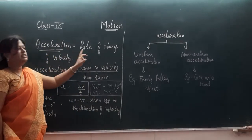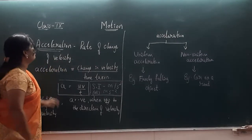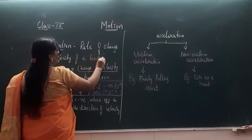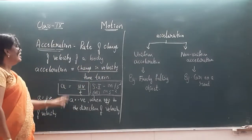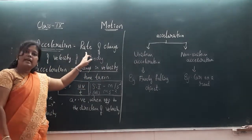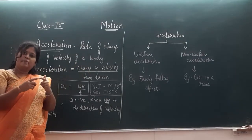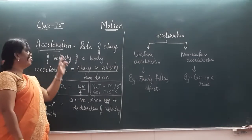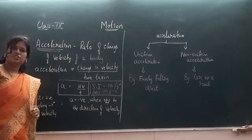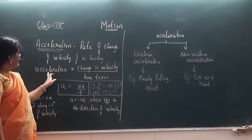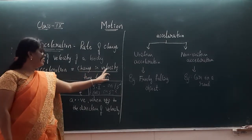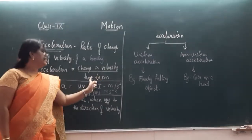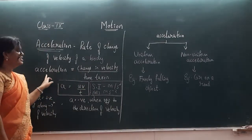So acceleration is defined as the rate of change of velocity of a body. The word 'rate' here means it is changing with respect to time. Rate of change of velocity of a body is what we call acceleration. If you write it in the form of a formula, then acceleration is change in velocity divided by time taken.